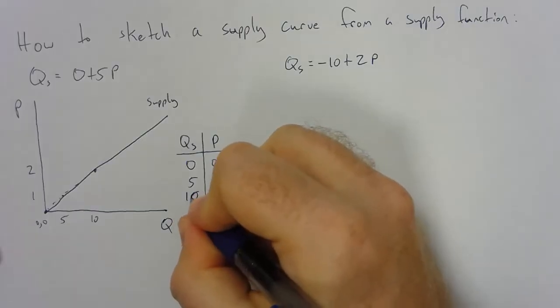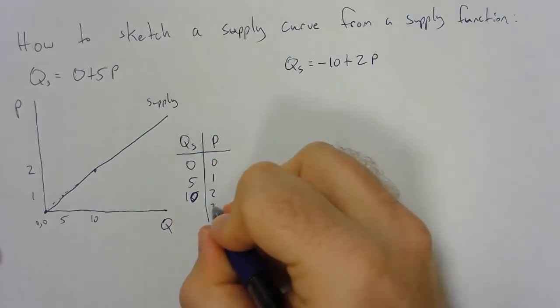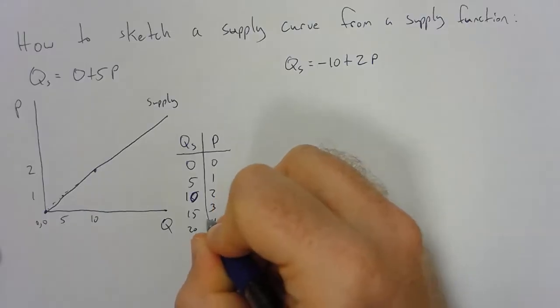It's going to end up being ten. Three, fifteen. Four, twenty. That sort of thing.